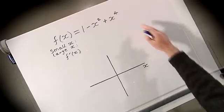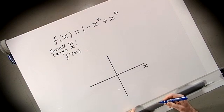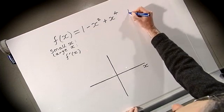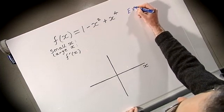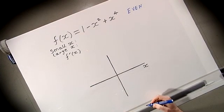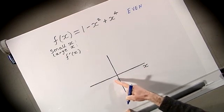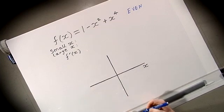For a first example, let's consider the function f(x) = 1 - x² + x⁴. The first thing to notice is that this is an even function because it only involves even powers of x. That means we can sketch the function for positive values of x and then deduce the values for negative x from the symmetry.